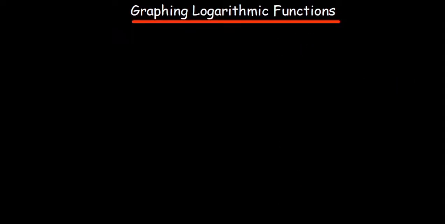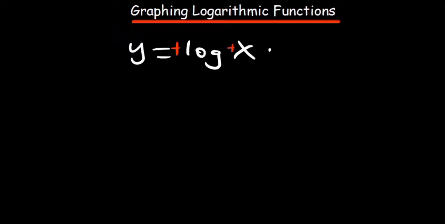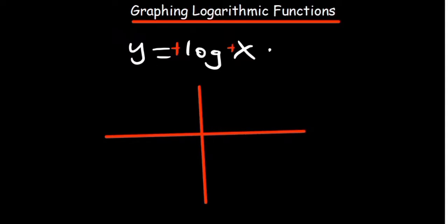So basically when you have y equal to log of x, what you are going to be considering is the sign of the log and also the sign of x. You ask yourself: since we have a positive log and a positive x, in which quadrant are both positive? Where y is positive and x is positive — it's basically in the first quadrant. So this logarithm is going to come out like this.